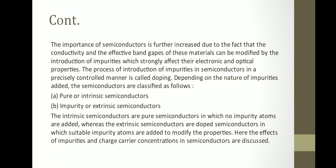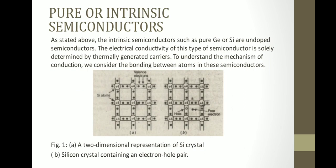Depending on the nature of impurities added, semiconductors are classified as pure or intrinsic semiconductors, and impurity or extrinsic semiconductors. Intrinsic semiconductors are pure semiconductors in which no impurity atoms are added, whereas extrinsic semiconductors are doped semiconductors in which suitable impurity atoms are added to modify the properties.